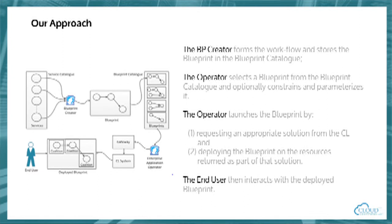This workflow we call a blueprint. Once the blueprint is created, we save it in a catalogue known as a blueprint catalogue. Another actor — the enterprise application operator — can go to this catalogue, take a blueprint, and parameterise or constrain it in particular ways. They can say, for example, that this collection of services should be as quick as possible or as cheap as possible, and specify that the blueprint will operate on data of a particular size.